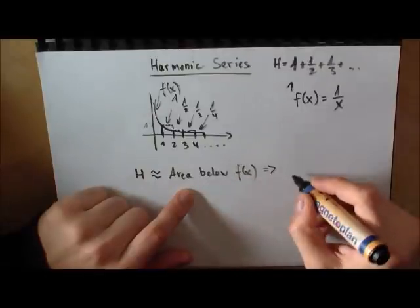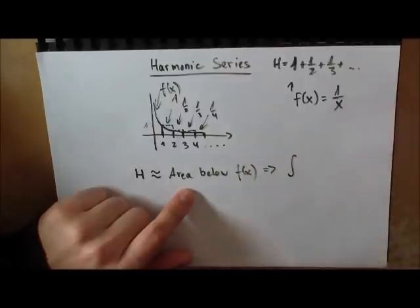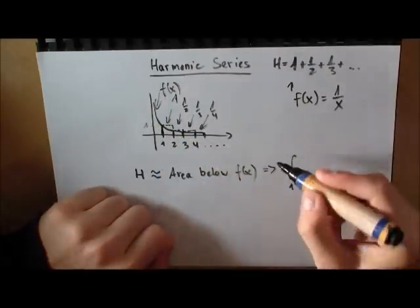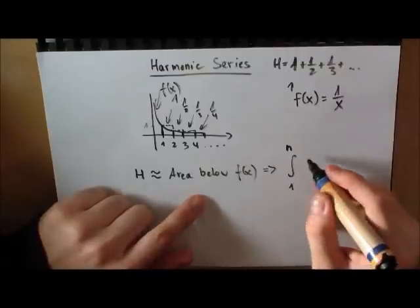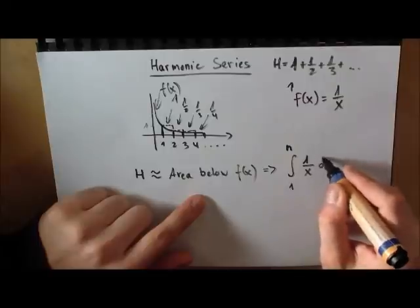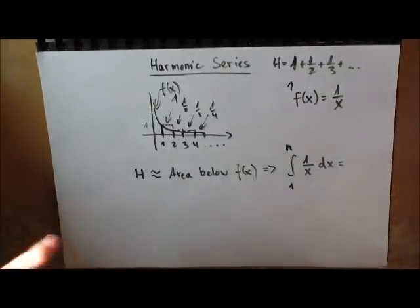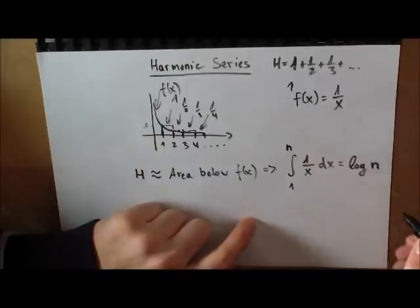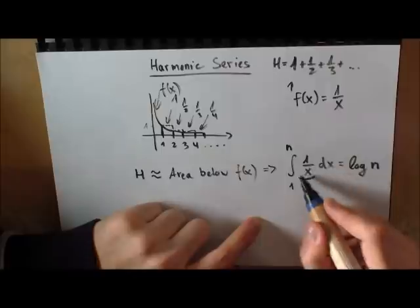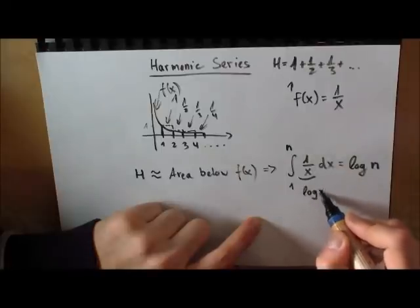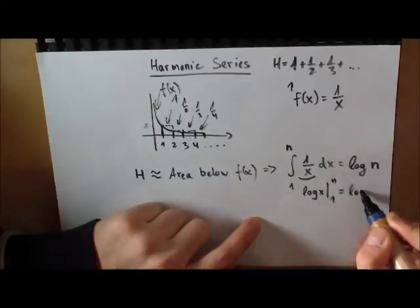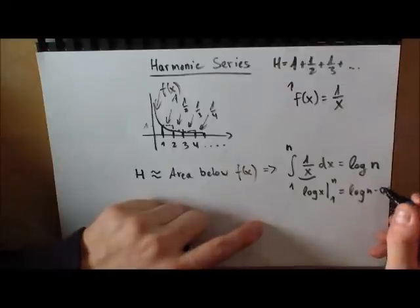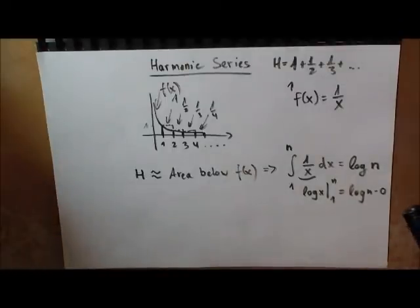If you've had calculus and know how to calculate the area below a curve using an integral: the area from 1 to a large number N is the integral of 1/x dx. If you know the natural logarithm, you know this equals log(N), because the antiderivative of 1/x is log(x), and evaluating at the boundaries gives log(N) minus log(1), which is zero, so the result is log(N).